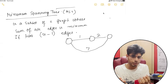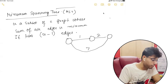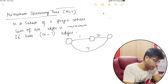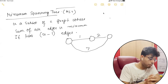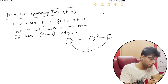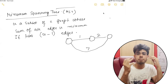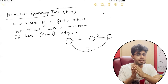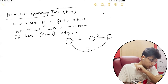What is a minimal spanning tree? A minimal spanning tree, as I've already written here, is a subset of a graph where the sum of all edges is minimum. It has n minus 1 edges, where n is the number of vertices.